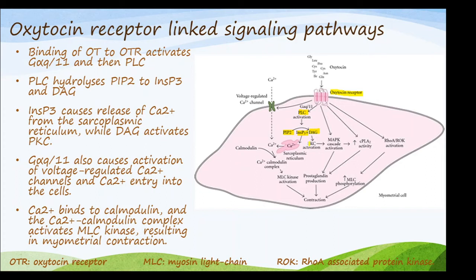Diacylglycerol activates protein kinase C. Protein kinase C activates the MAP kinase cascade activation system. This MAP kinase cascade activation system increases cytoplasmic phospholipase A2 activity.